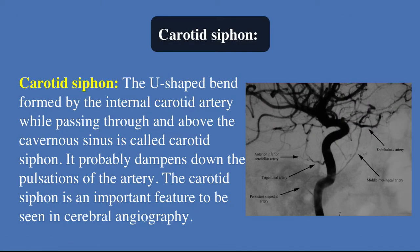Carotid siphon: the U-shaped bend formed by the internal carotid artery while passing through and above the cavernous sinus is called the carotid siphon. It probably dampens down the pulsation of the artery. The carotid siphon is an important feature to be seen in cerebral angiography.